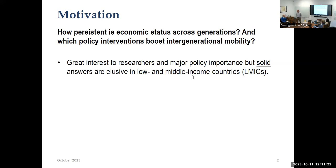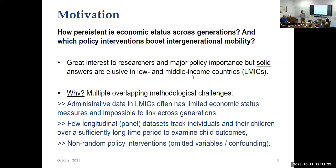There's been more evidence on this in recent years using large admin data sets in rich countries, but less so in LMICs. One reason is limited data availability — in poor countries there isn't usually the kind of registry or admin data available. We would need to rely on other data sources, but there are very few long-term longitudinal data sets in poor countries that span generations. A fundamental issue is getting the kind of variation we can interpret as causal — either randomized variation or some other exogenous variation in a world of many confounders.